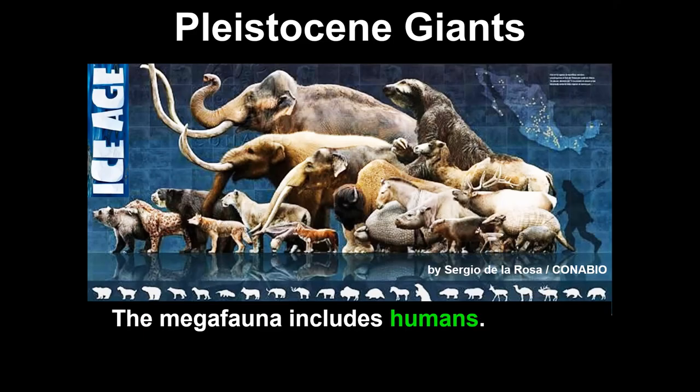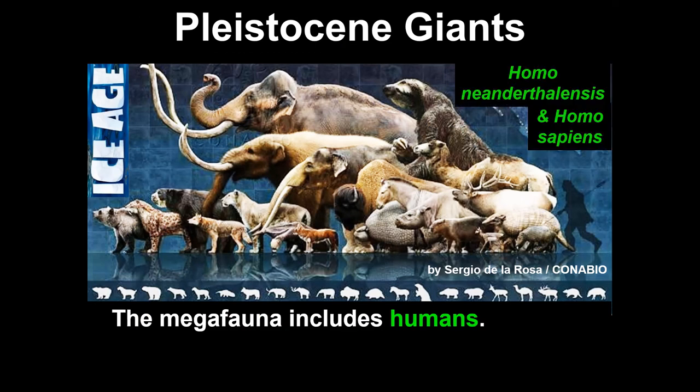Pleistocene giants — the megafauna includes humans. In particular, Homo neanderthalensis and Homo sapiens are megafauna. We're very large humans, especially the Neanderthals, who were much more muscular than we are — highly adapted, at least some of their population, for the Ice Age environment and cooler conditions. There might have been other humans that also reflect megafauna trends, just like modern humans and Neanderthals.